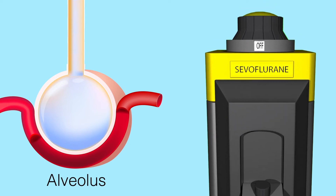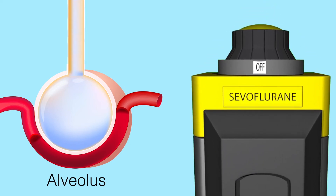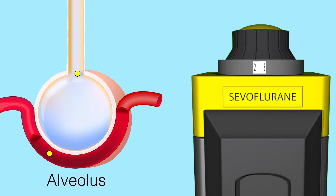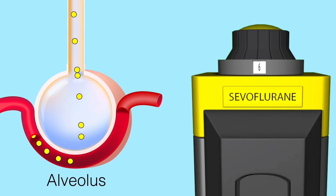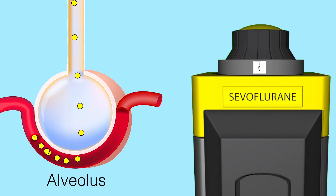Right now, there is no Sevoflurane in the patient. As we cut on the dial, Sevoflurane will enter the alveoli and begin to cross into the alveolar capillaries. If we want to speed things up, we can crank the dial way up — let's turn it to 6%. As more Sevo molecules flood into the alveoli, they have a higher partial pressure, which as Dr. Henry stated, will increase the amount of Sevoflurane going into solution in the capillary.